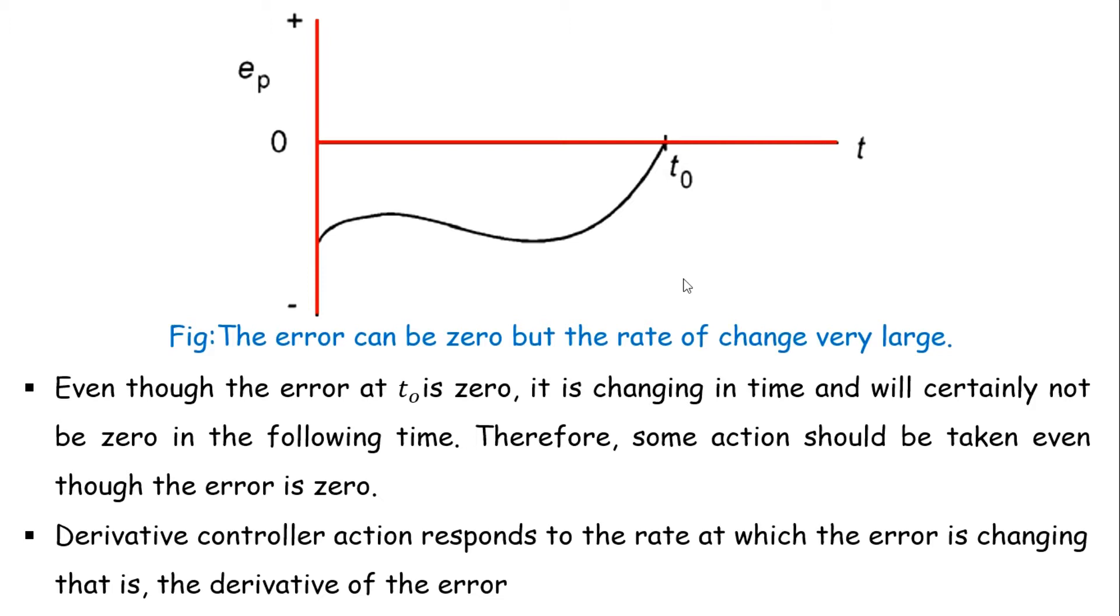Derivative controller action responds to the rate at which the error is changing, that is the derivative of the error.